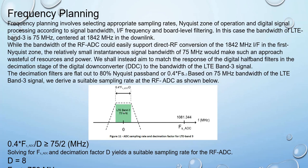With a signal bandwidth of 75 MHz, and the condition 0.4 × F_ADC / D > 75 MHz / 2, solving for F_ADC with decimation factor D = 8 yields a suitable sampling rate for the RF ADC. F_ADC should satisfy F_ADC > 75 MHz / (0.4 / D), ensuring sufficient bandwidth coverage.